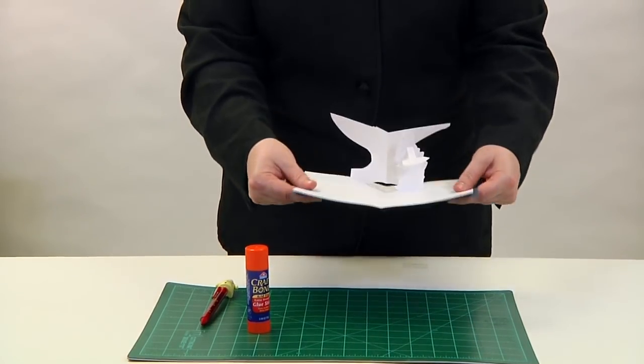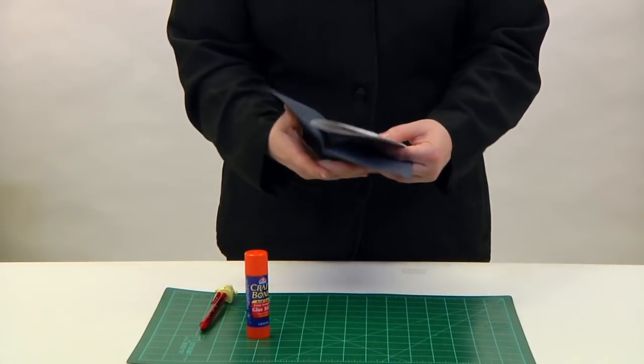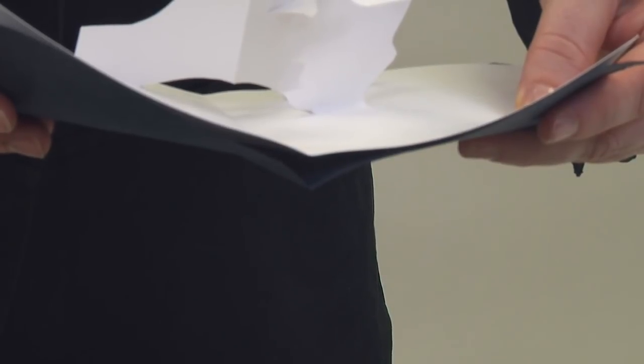Make sure to have the spread completely open when gluing down the cover. If glued while closed, the item may not open completely or a gap will appear along the spine.